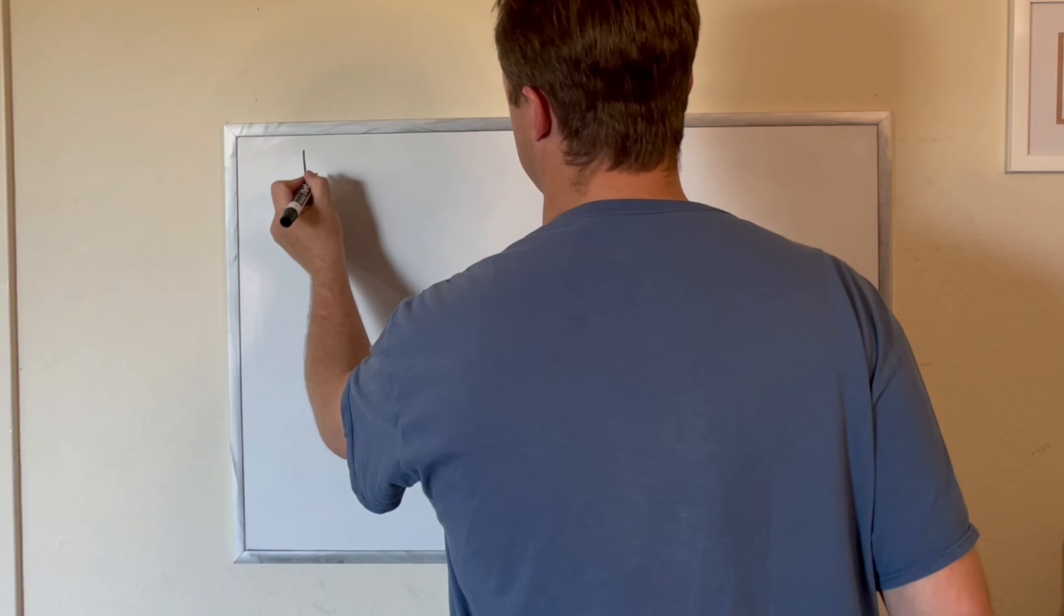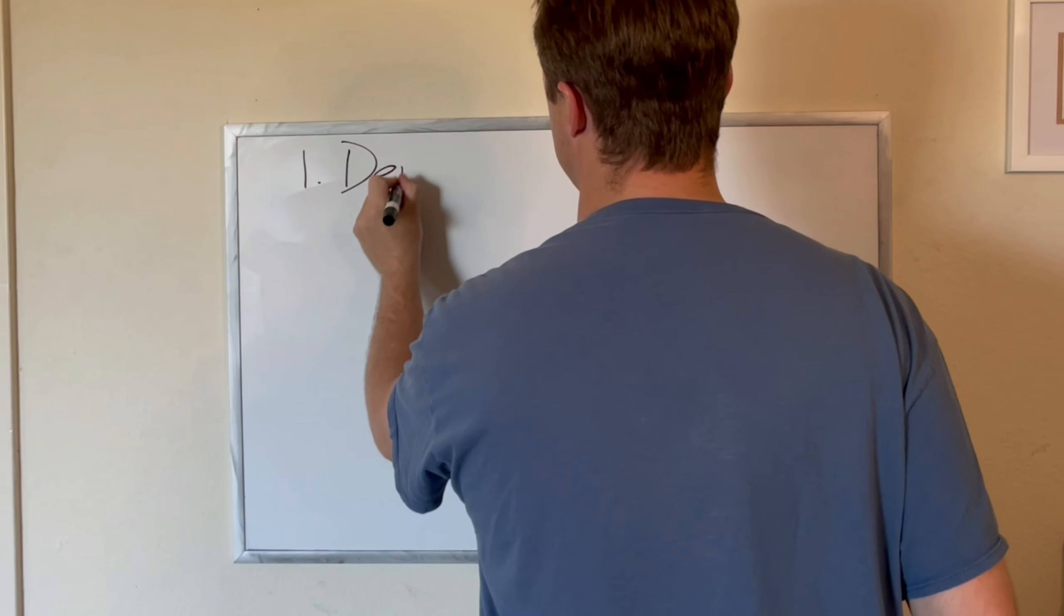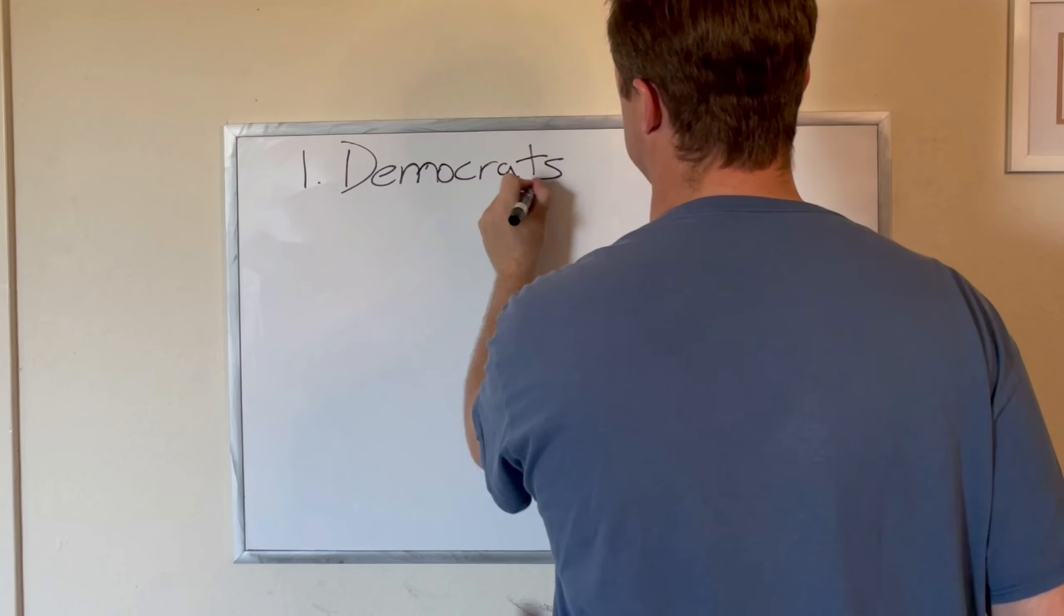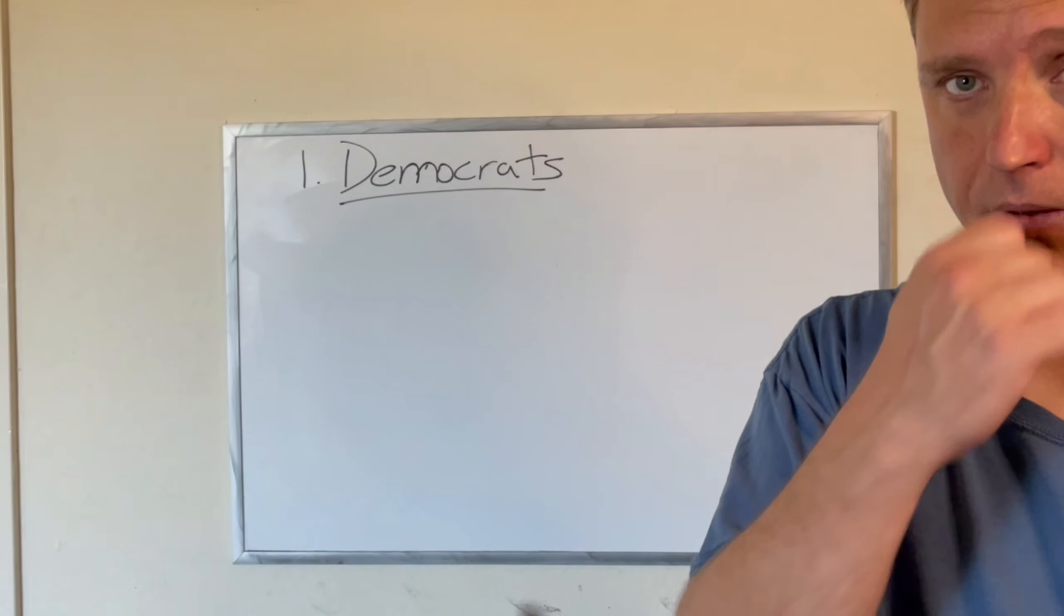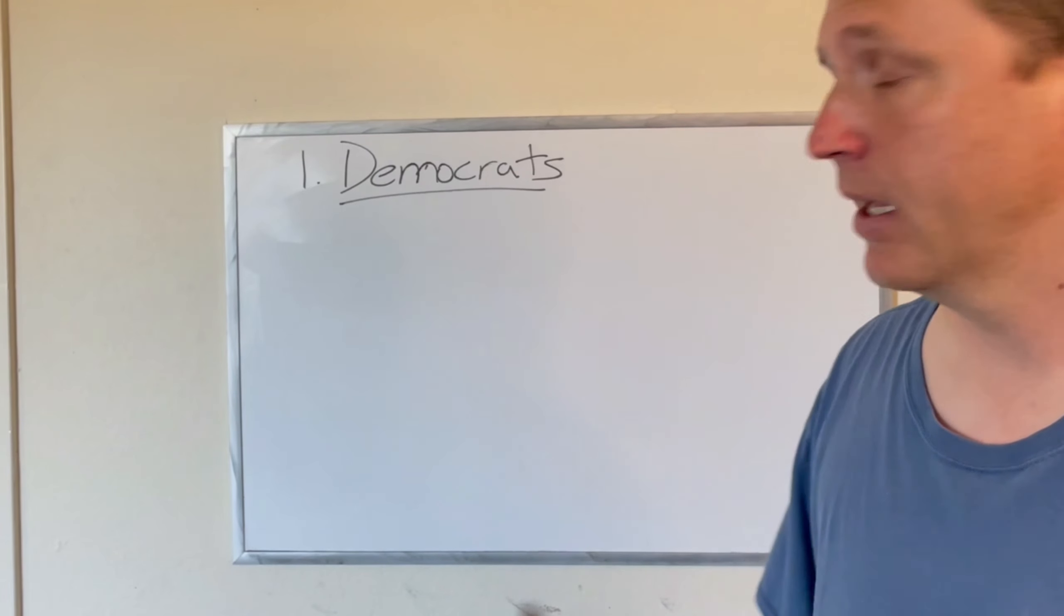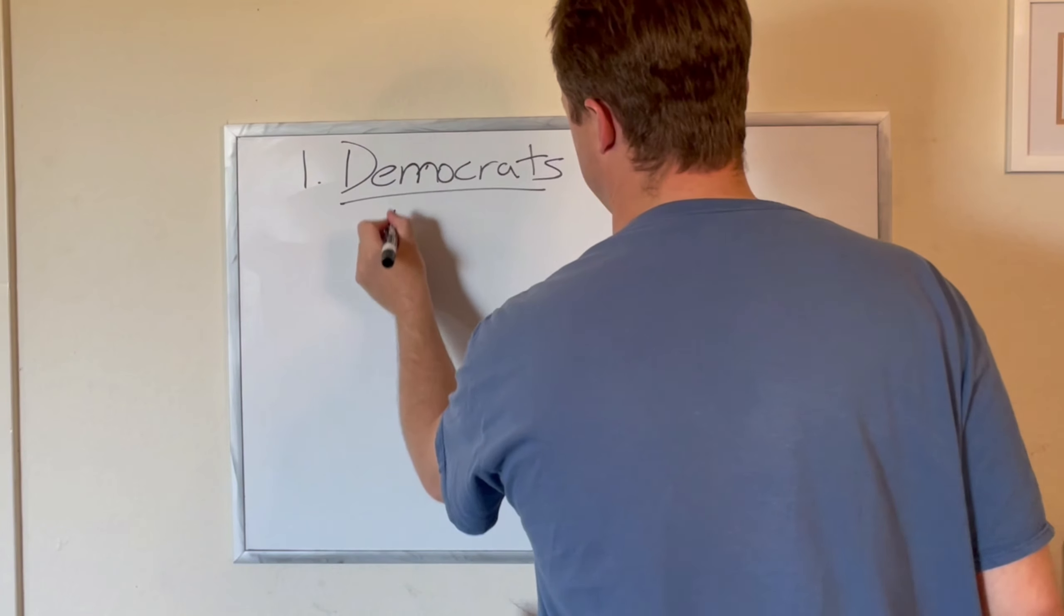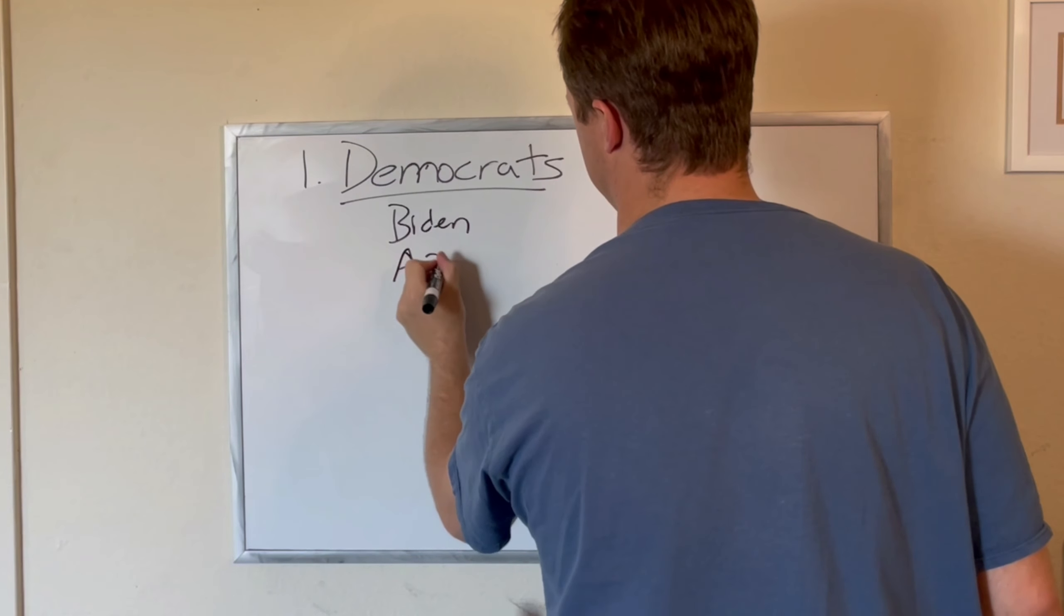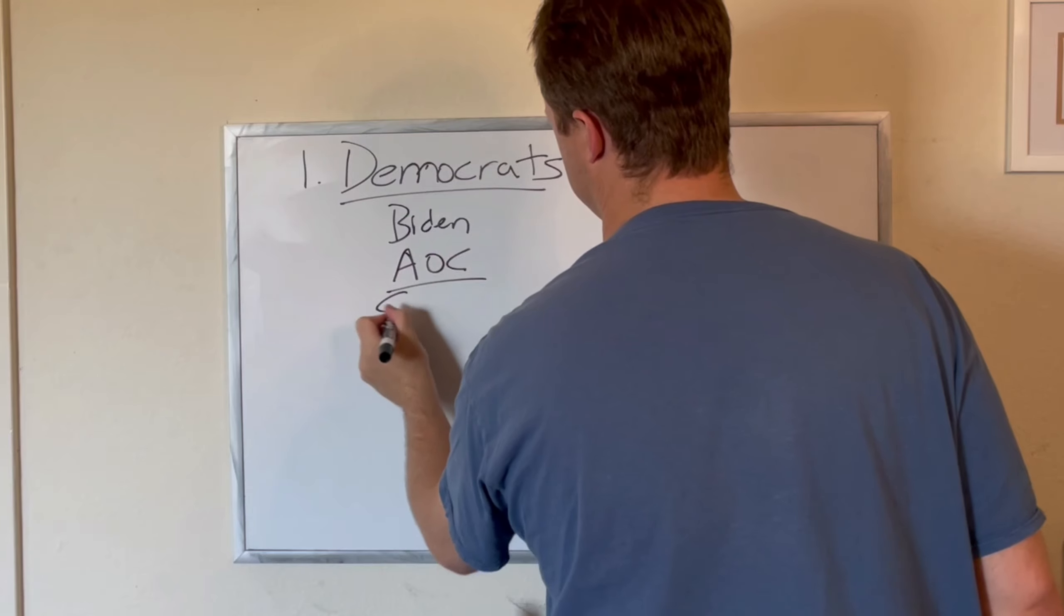The first thing we did is we nominated Democrats to be in control, and they don't have any clue, most of them have no clue how to run a country, let alone run a business. You let Biden take power. You let AOC take power, and you let the squad take power.